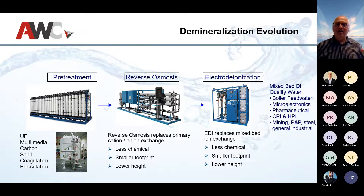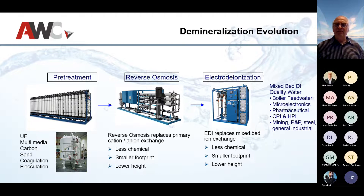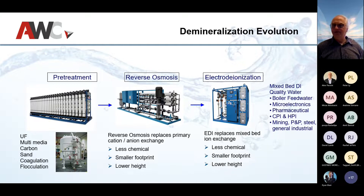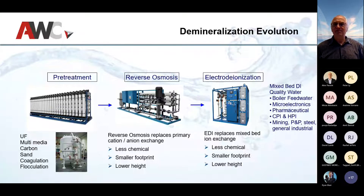This also gives us savings that go beyond the specific two unit operations. For greenfield sites, with two unit operations that are lower height and lower footprint, you can make a smaller building. In brownfield sites, you may be able to recover some space for other things you want to do at your factory.